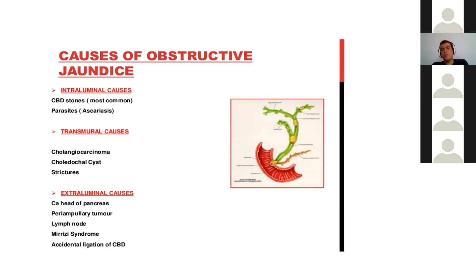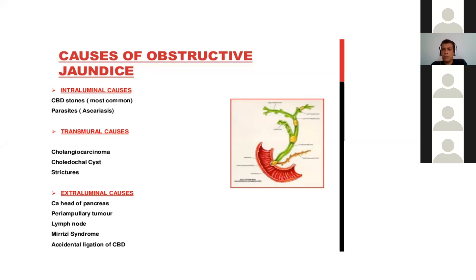Apart from benign strictures, there could be malignant strictures as well. In patients above 60 years of age, any stricture present is considered malignant until proven otherwise — 90% of strictures tend to be malignant in elderly patients. There are also choledochal cysts, which are important because they may predispose to cholangiocarcinoma. These are the most common transmural causes you will encounter.